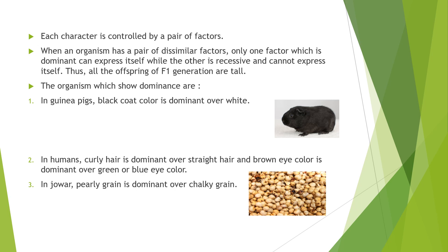Organisms which show dominance include: in guinea pigs, black coat color is dominant over white. In humans, curly hair is dominant over straight hair, and brown eye color is dominant over green or blue eye color. In jowar, pearly grain is dominant over chalky grain.